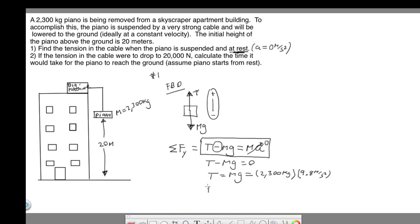This is going to be 9.8 meter per second squared, which gives us a tension of 22,540 newtons. A newton is equivalent to kilogram meter over second squared, which is what we have here. Kilogram meter per second squared, that's called a newton.